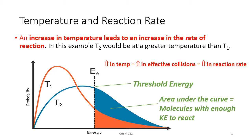In this last section, we're going to learn about how temperature relates to the rate of a reaction. We've previously seen that an increase in temperature leads to an increase in the rate of a reaction. In the example below, let's consider two different temperatures, T2 and T1, where T2 is a greater temperature than T1.